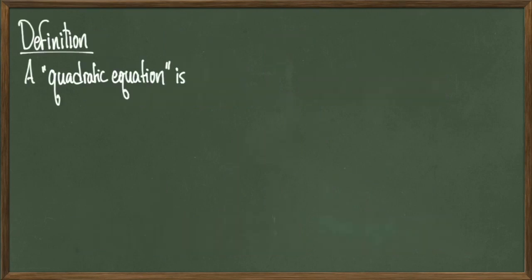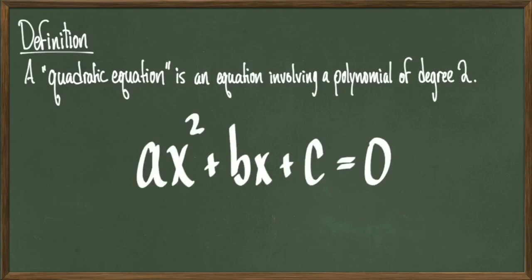When you have an equation that's a polynomial of degree 2 set equal to 0, you call it a quadratic equation. And it looks something like this. So a, b, and c are going to be real numbers and a is assumed not to equal 0 because the x squared term being present here is what makes this a quadratic equation.